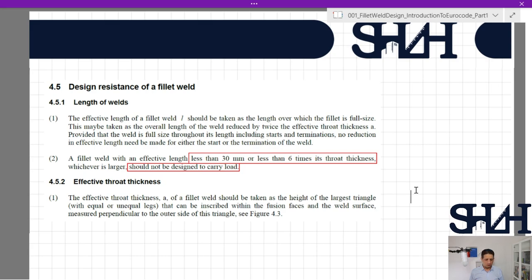Usually we deduct two times A, even though it doesn't really affect the design significantly if you dimension the weld with quite a good margin. Then this value might not affect that much. A fillet weld with an effective length less than 30 millimeters or less than six times its throat thickness, whichever is larger, should not be designed to carry the load. For example, assume we have a weld with a dimension of 10 millimeters with throat thickness of 7 millimeters. Then 6 times 7 millimeters will be 42 millimeters—42 and 30, the greater value is 42 millimeters. So if the length is less than 42 millimeters, then we do not consider the fillet weld to carry any load.